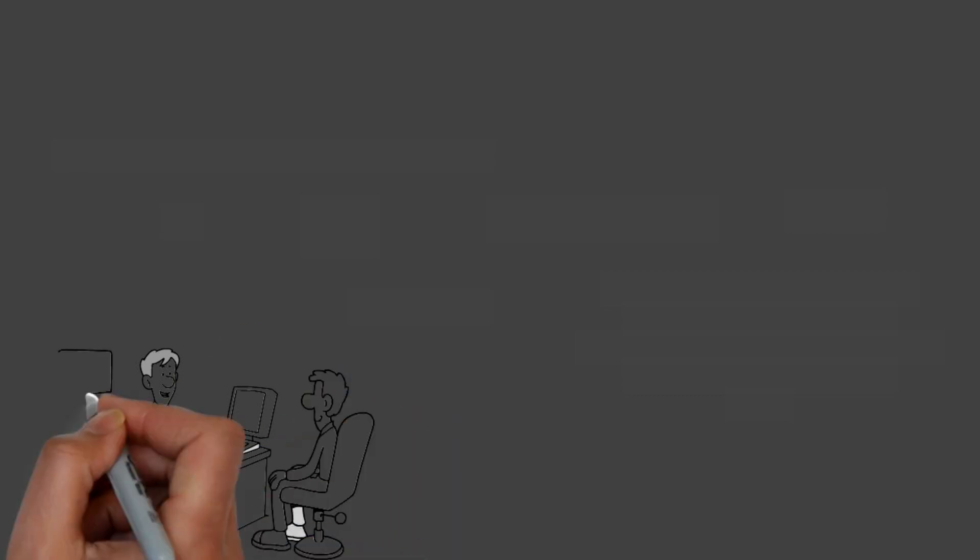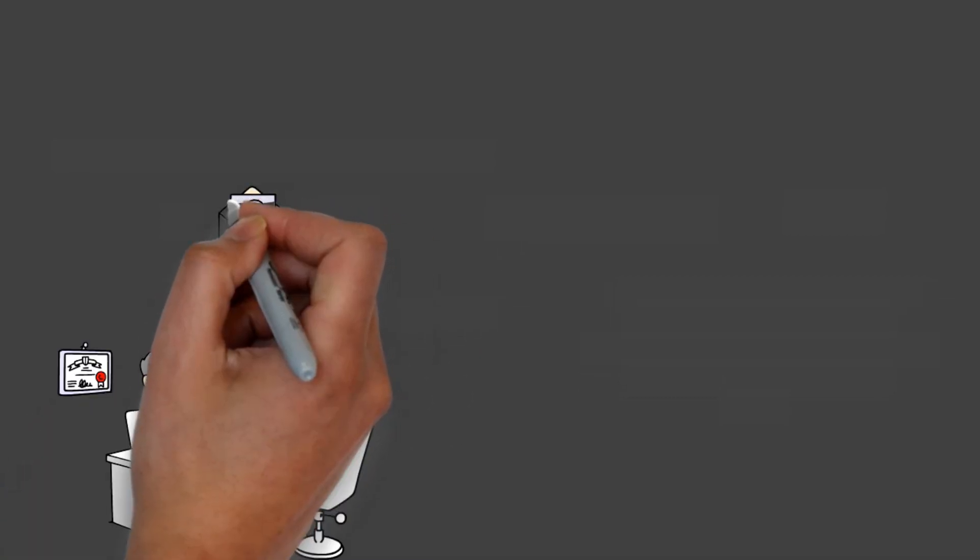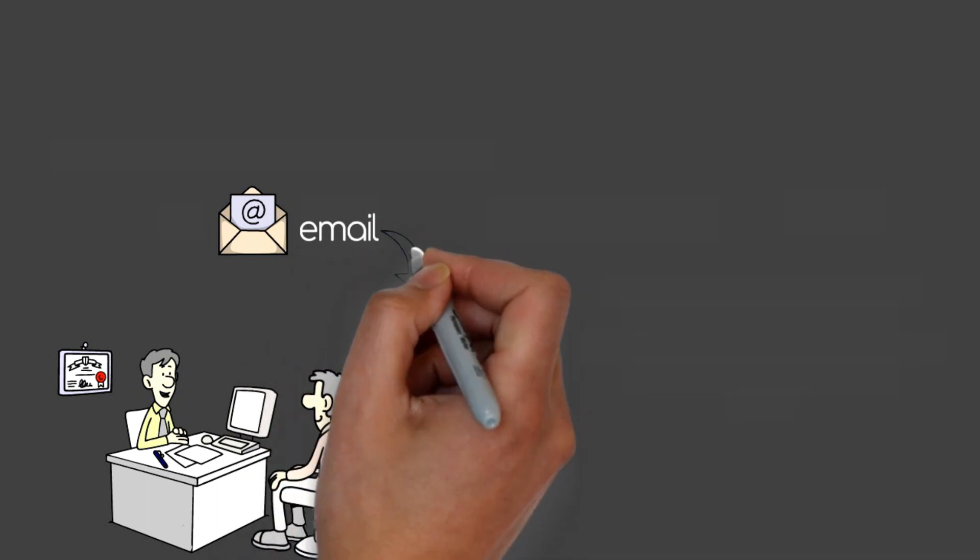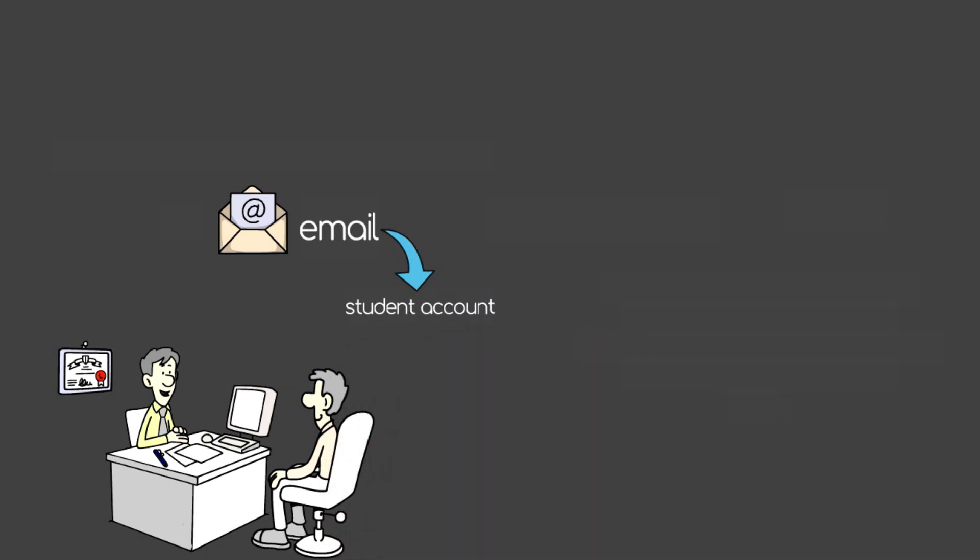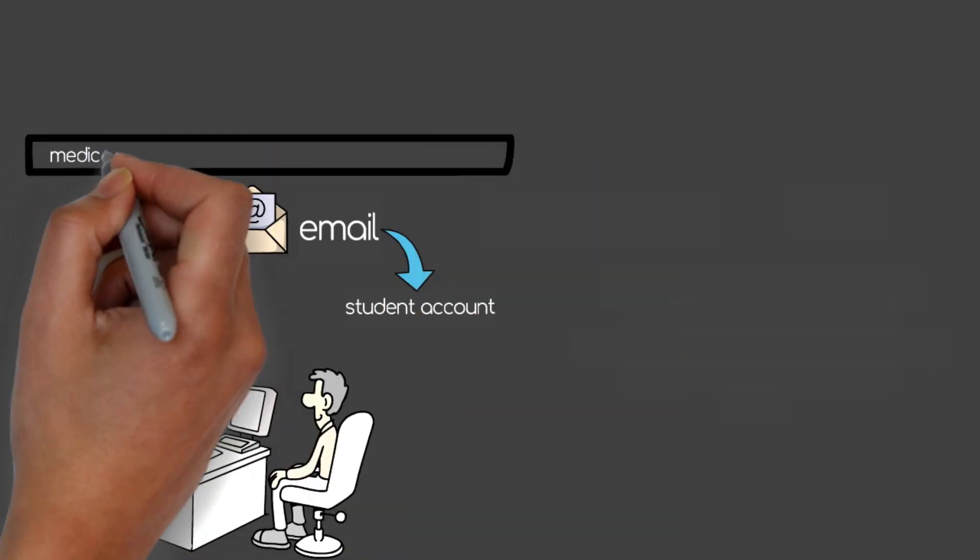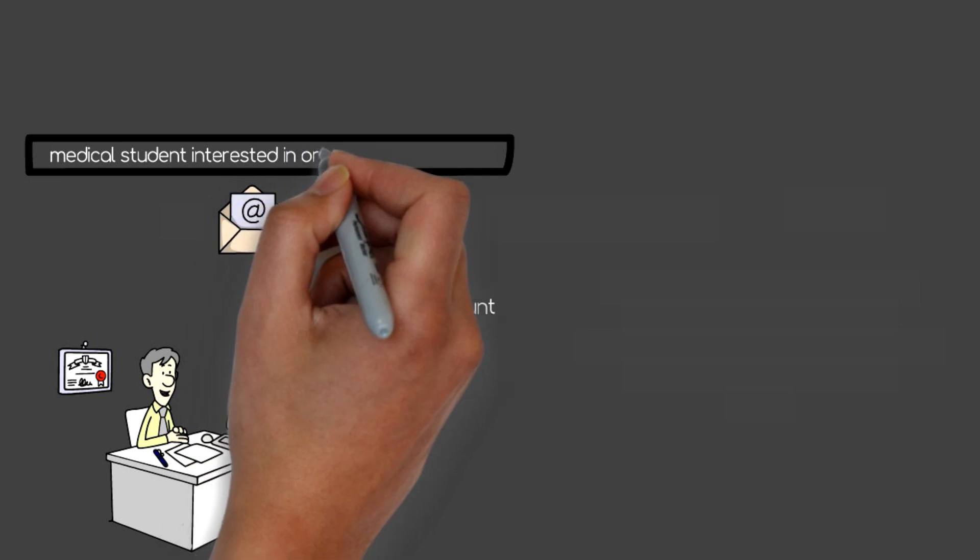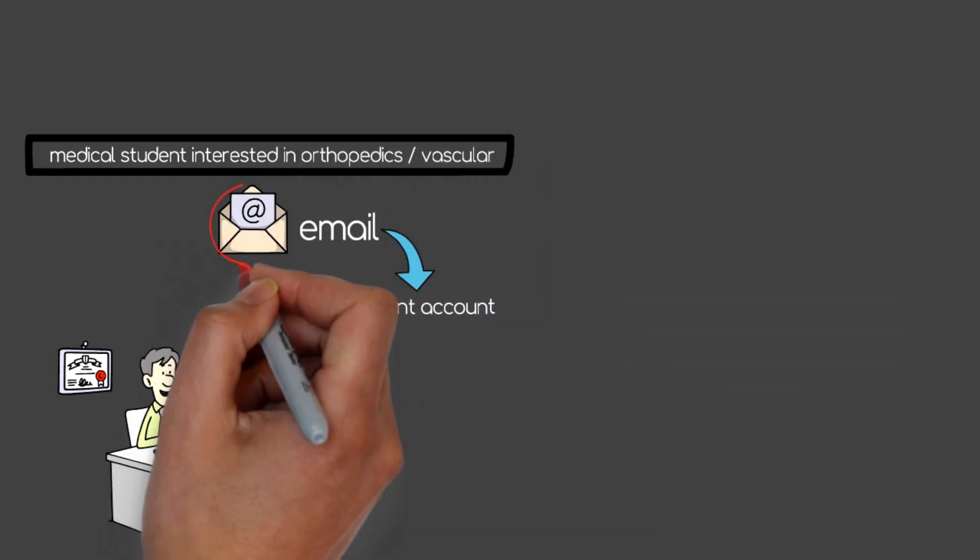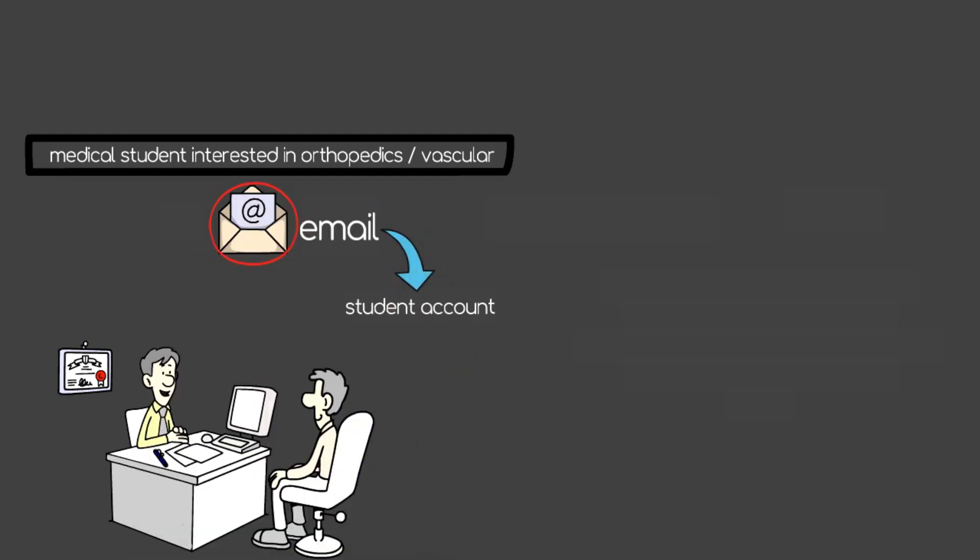After you've found who you want to shadow with, you're going to have to communicate with them, and this is usually done by email. Send them an email from a professional email account, from your student account. I like to just put in the subject heading something like medical student interested in orthopedics or vascular or whatever specialty you want to do a shadowing experience in. It's clear, it's to the point, they know what the email is going to be about.